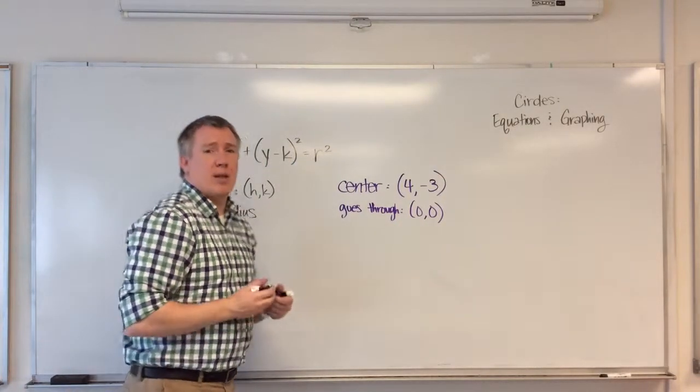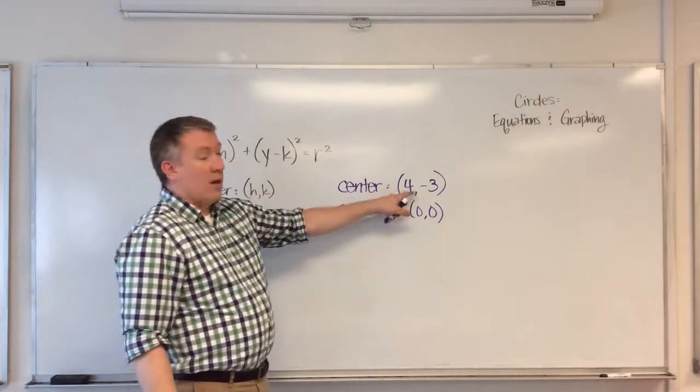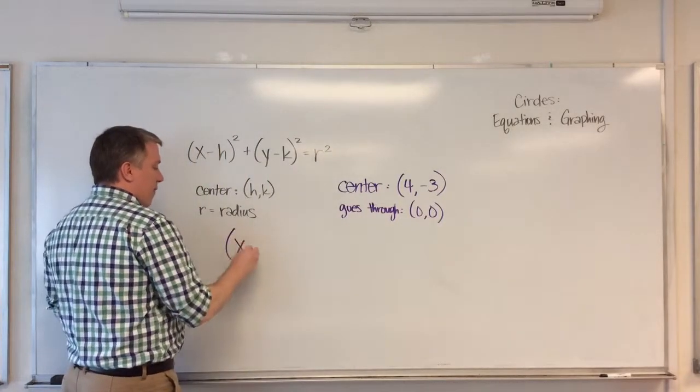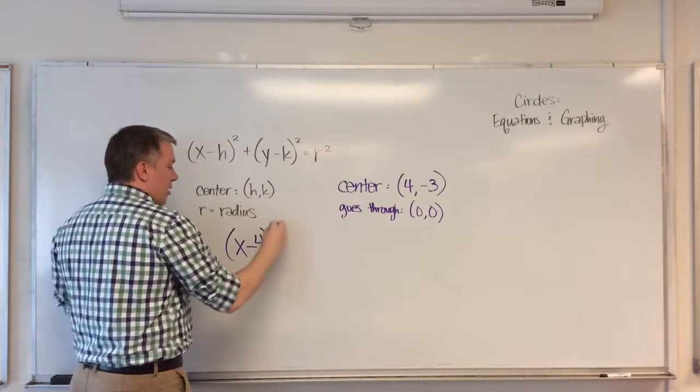Well, they've given us most of the information that we need already, which is h and k. h is 4, k is negative 3. So we can get started. So x minus h, h is 4, so minus 4, squared,